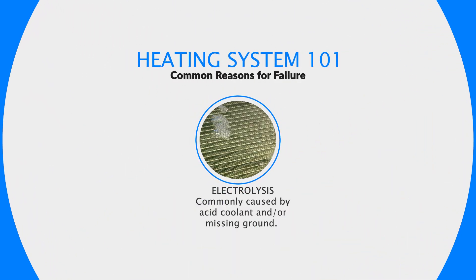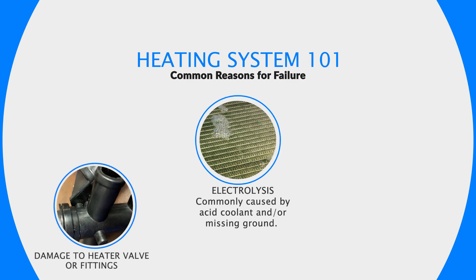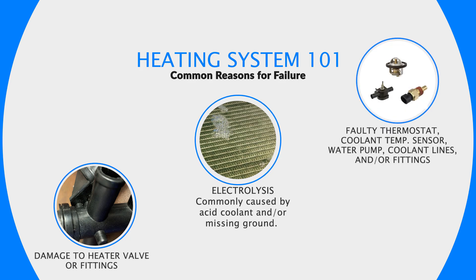To recap, let's take a look at interrelated components that may hinder the heating system. Electrolysis can affect both the radiator and heater core. Electrolysis is rapid corrosion due to an electrical current imbalance in the coolant; the two main causes are acidic coolant or missing grounds. Damage to the heater valve can prevent coolant flow to the heater core, impeding cabin heating.